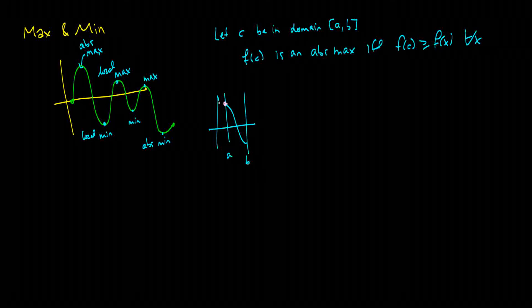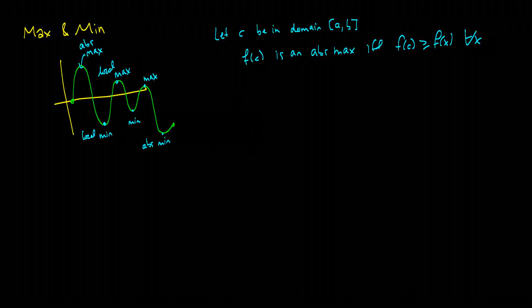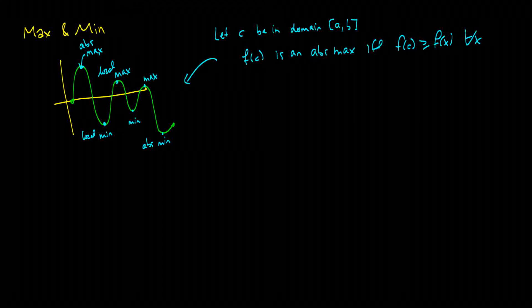If we take F of C, because it's greater than all of these other values here, this would be F of C right here. This just happens in this example to be at the point A. But if we were to take a look right here with this graph, well, this point here, this F of C, is greater than every single other point. So it's the absolute maximum.